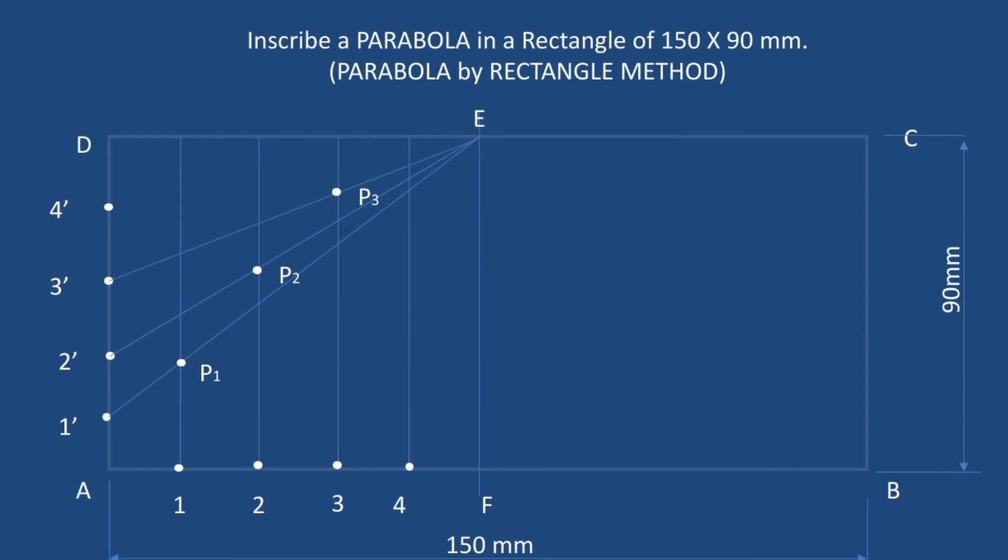Join the points E and 3 dash. The intersection of the line from 3 and 3 dash will give you the point P3. Join the points from E to 4 dash. The intersection of line from 4 and 4 dash will give you the point P4.